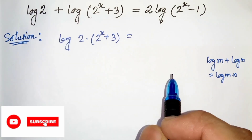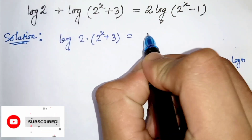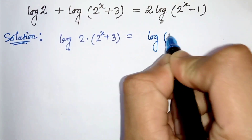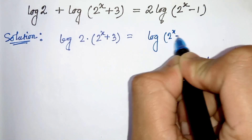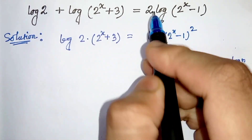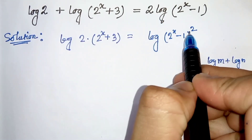Now on the right hand side we can write log of 2 to the power x minus 1, whole square. This 2 comes to the power.